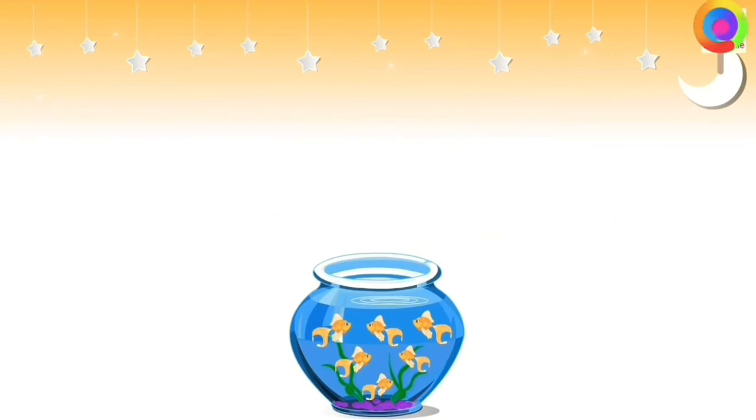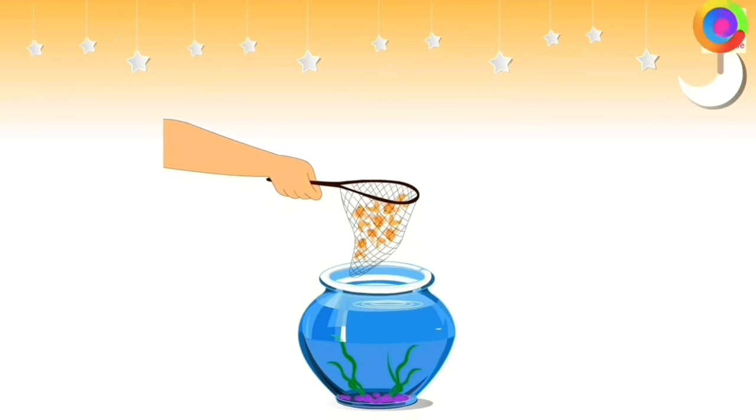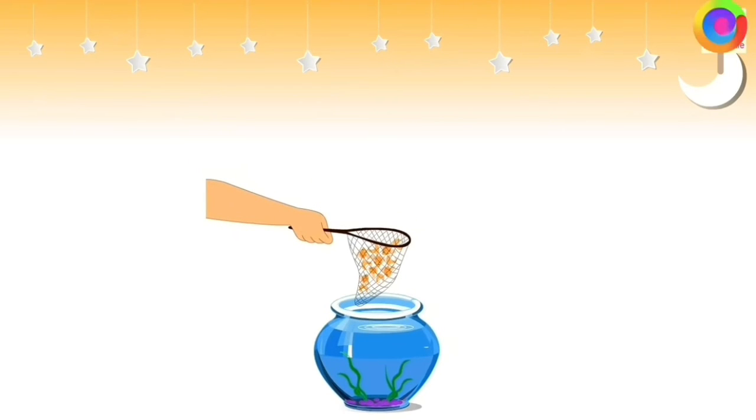Let us see one more example. There are 6 fishes inside the fishbowl. All the 6 are taken away. Now what is left? It is nothing, which is zero. So 6 minus 6 is equal to zero.